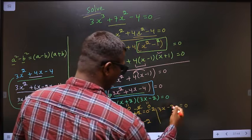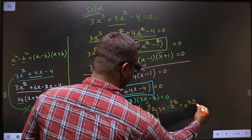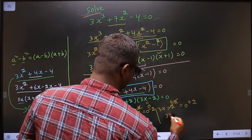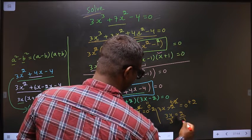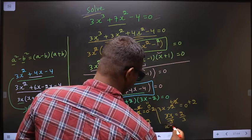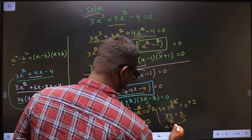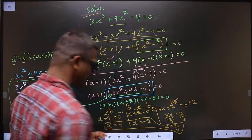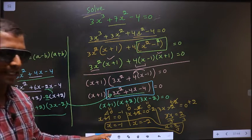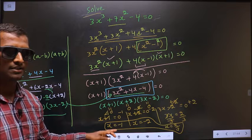So now to get x here, first you add 2 on both sides. So I get 3x = 2. Now divide by 3. So x = 2/3. These are the values for x. This is our answer.